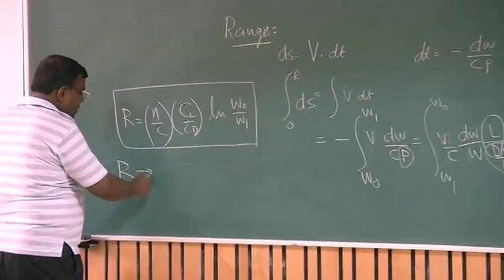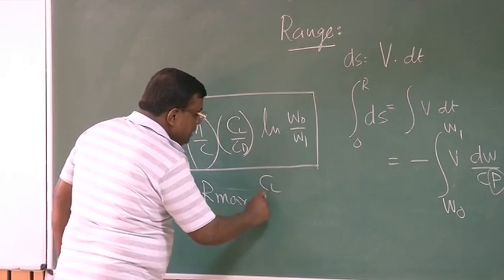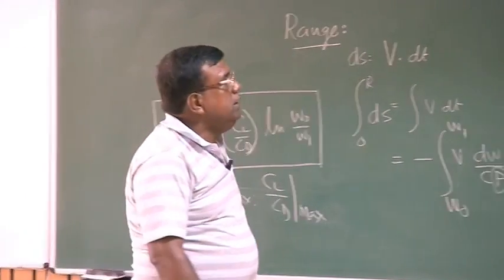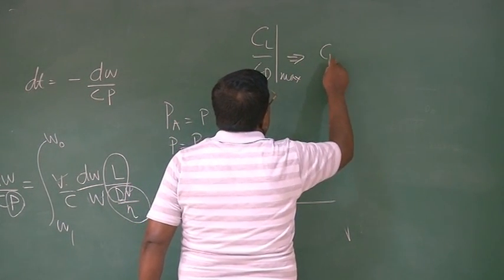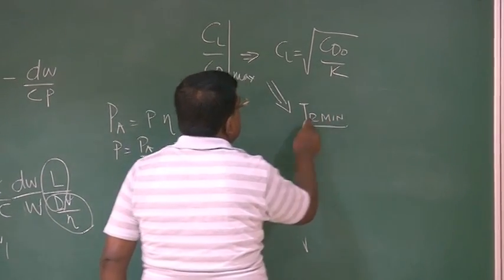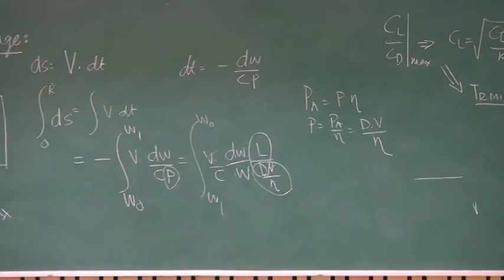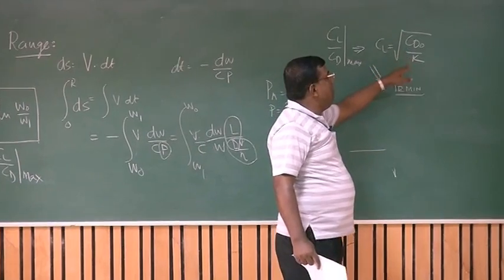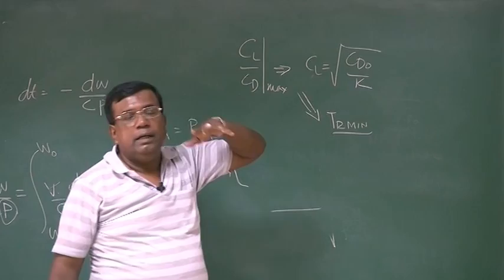Now see for range, what is the message? For range message is, for given η and C, range will be maximum when CL by CD is maximum. What is the meaning of that? We have already seen CL by CD maximum means it is CL equal to square root of CD₀ by K, or this is also a condition for thrust required minimum. So if I want to fly for higher range for a given tank of fuel, message is very clear that for maximum range I should fly such that CL by CD is maximum, or in turn I should fly at a CL which is fixed given by square root of CD₀ by K. And the pilot will be flying at any speed at this CL so that lift equal to weight and is having a cruise flight.